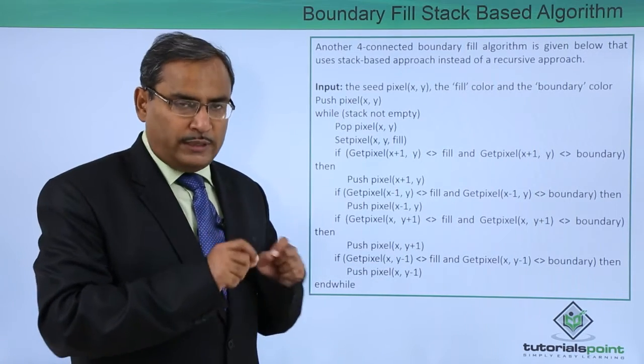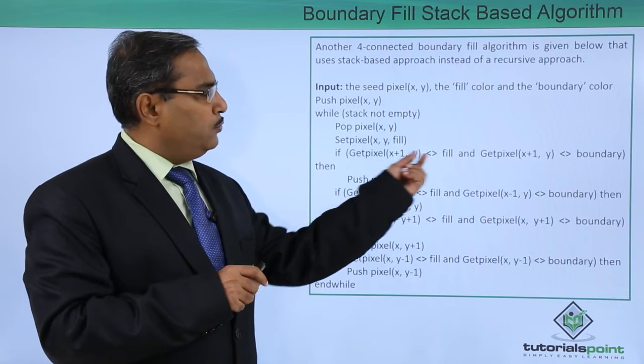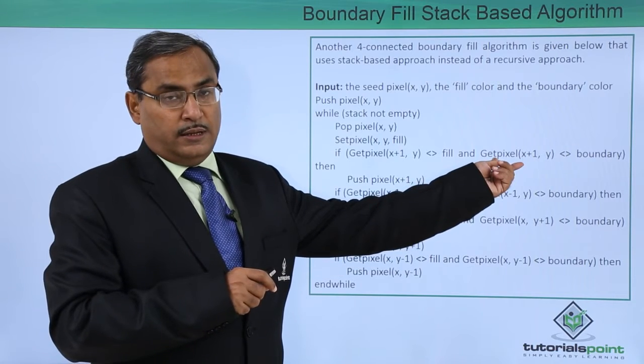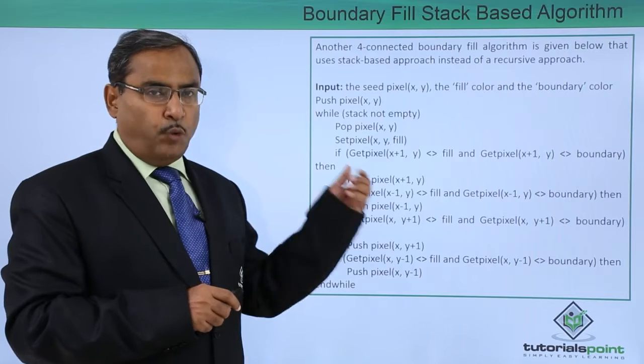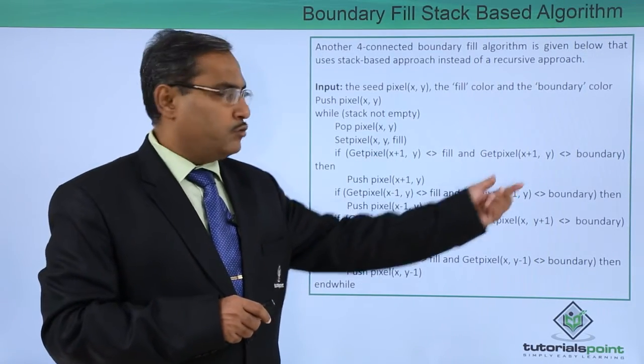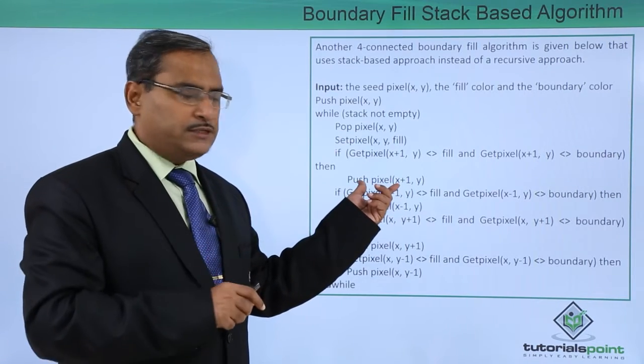For the four neighbors, we are doing this check. What is the check? Whether the neighbor is not prefilled with the fill color and whether this particular neighbor is prefilled with the boundary color. If both are false - that means if it is not true and if it is also not true - then we are pushing that one on the top of the stack.